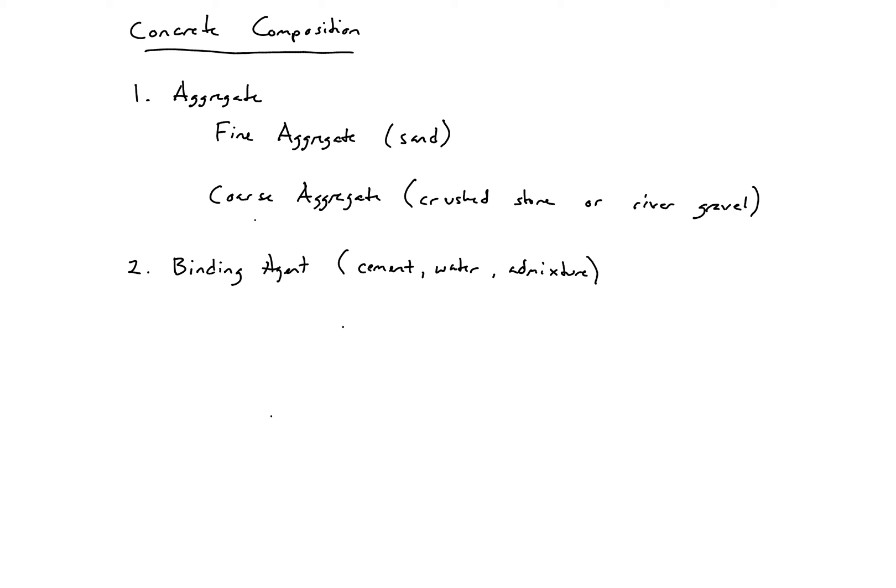So we also have the binding agent. And typically, as I said, cement is used. So cement is made up of four main components, and we can remember them using LISA.